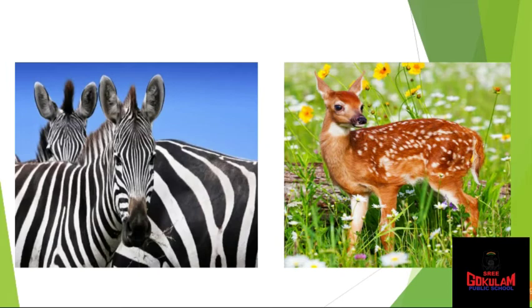The ones with white and black stripes are called zebras, and the other one is a deer. All these animals are living things. They have their food, they grow, and they have babies too.